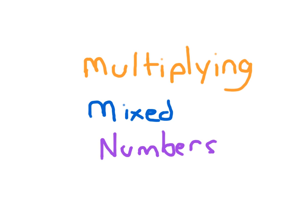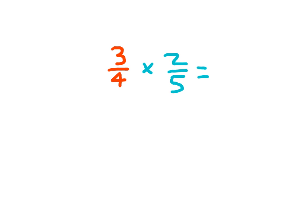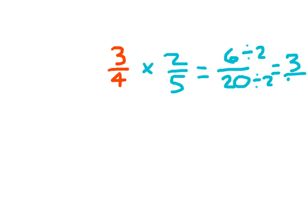In this lesson, we're going to learn about multiplying mixed numbers. You probably know all about multiplying fractions by now. If we have 3 fourths times 2 fifths, we just multiply the numerators together, which is 3 times 2, which is 6. And we multiply the denominators together, which is 4 times 5, which is 20. And 6 twentieths is equal to 3 tenths.